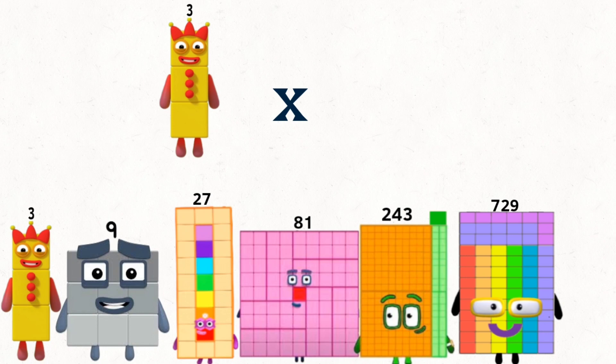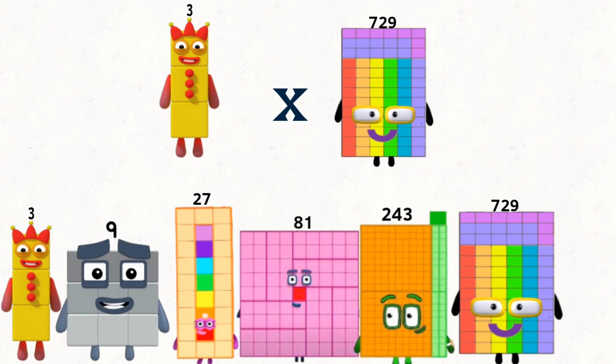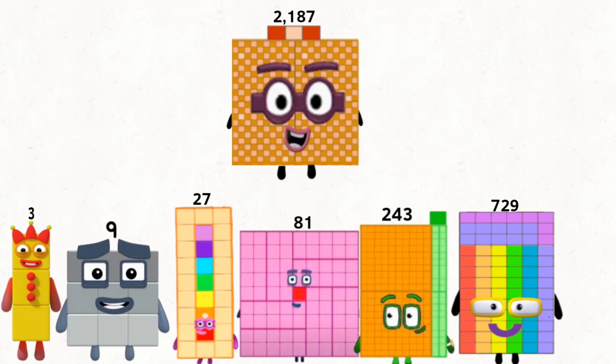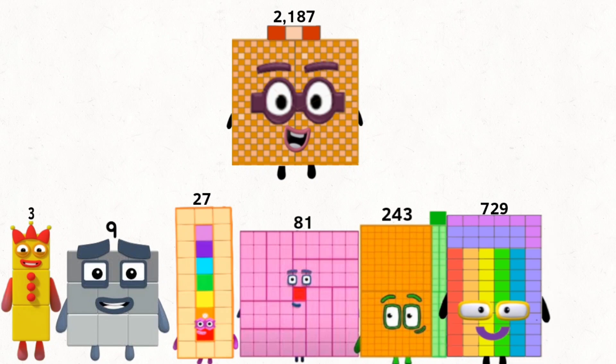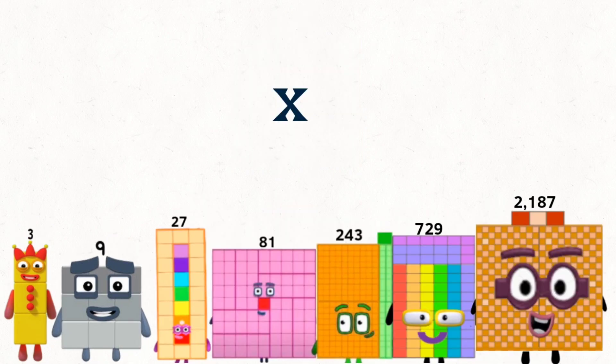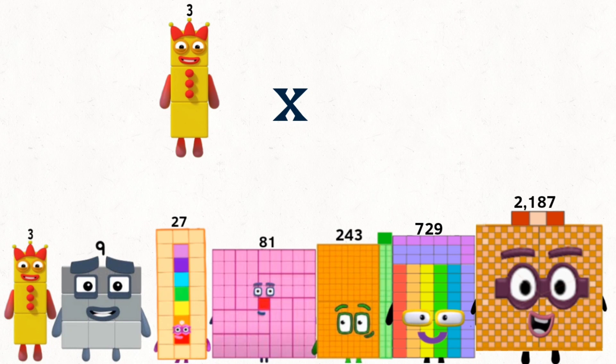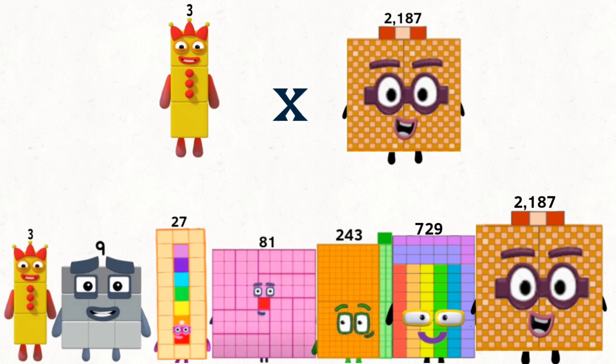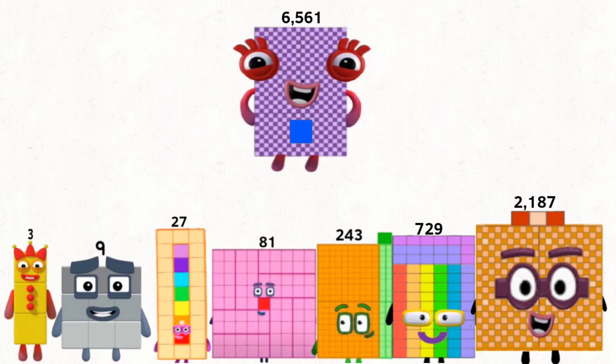3 times 729 equals 2,187. 3 times 2,187 equals 6,561.